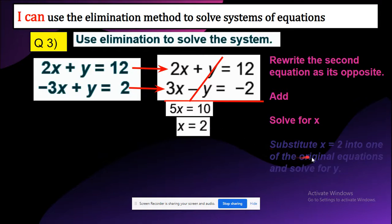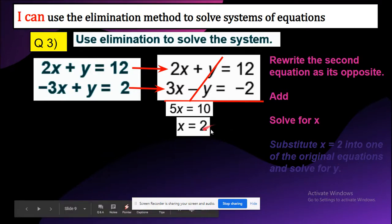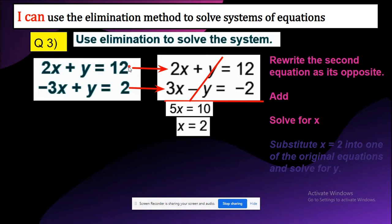Now substitute x equals 2 into one of the original equations and solve for y. So you're going to plug in 2 into one of the equations. It's up to you which you choose, but the simpler the equation you choose, the faster and easier you'll complete the method. The simpler equation is the first one.